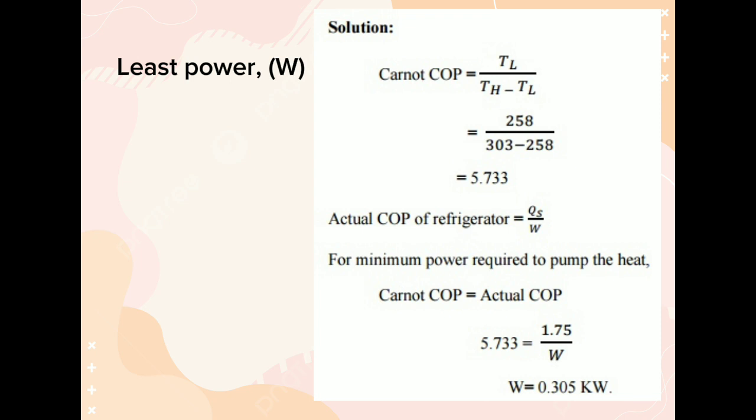Substitute again. So, 5.733 is equal to 1.75 over W. So, the least power is equal to 0.305 kW.